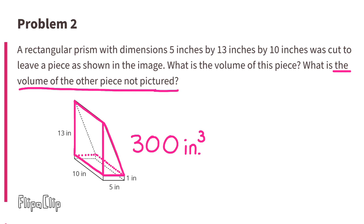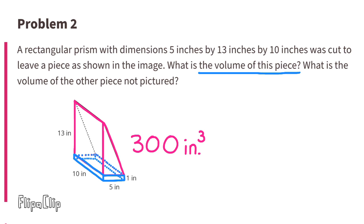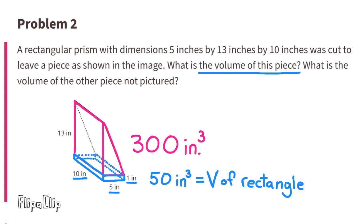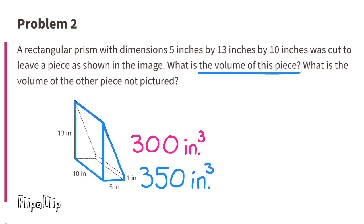Because the piece that's not pictured is the same size as the piece that is pictured, except for this little blue section, to find the volume of the piece that is pictured we just have to add the volume of this blue section to 300 cubic inches. 5 times 1 times 10 is 50 cubic inches. So the volume of the entire rectangular prism shown is 350 inches to the third power.